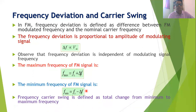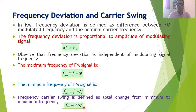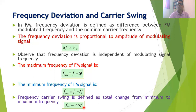A new term called carrier swing is defined as the total change from minimum to maximum frequency of the FM signal. Therefore, the carrier swing equals 2 times delta-f. For example, if delta-f (frequency deviation) is 75 kHz, then the carrier swing will be 150 kHz. Carrier swing is important for determining the FM channel spacing.